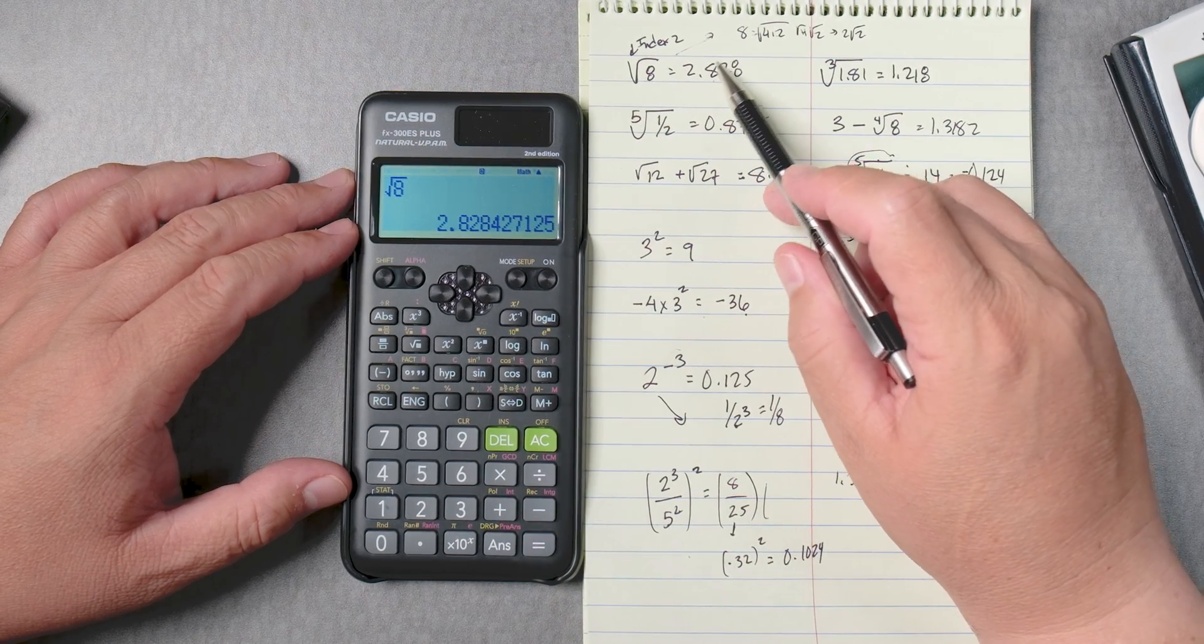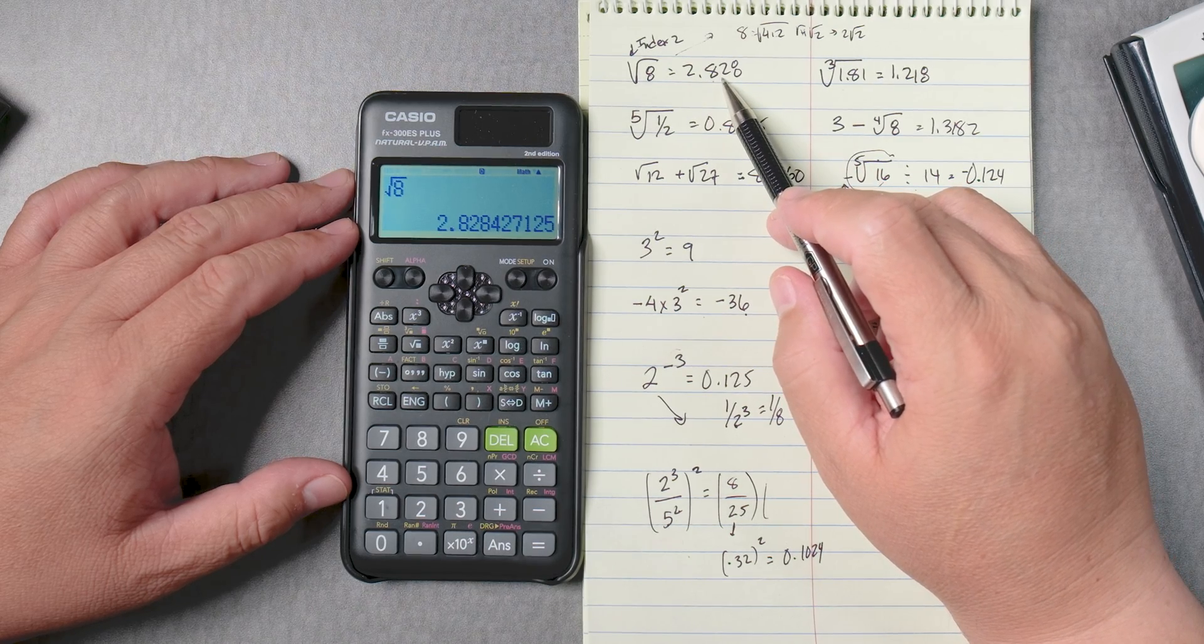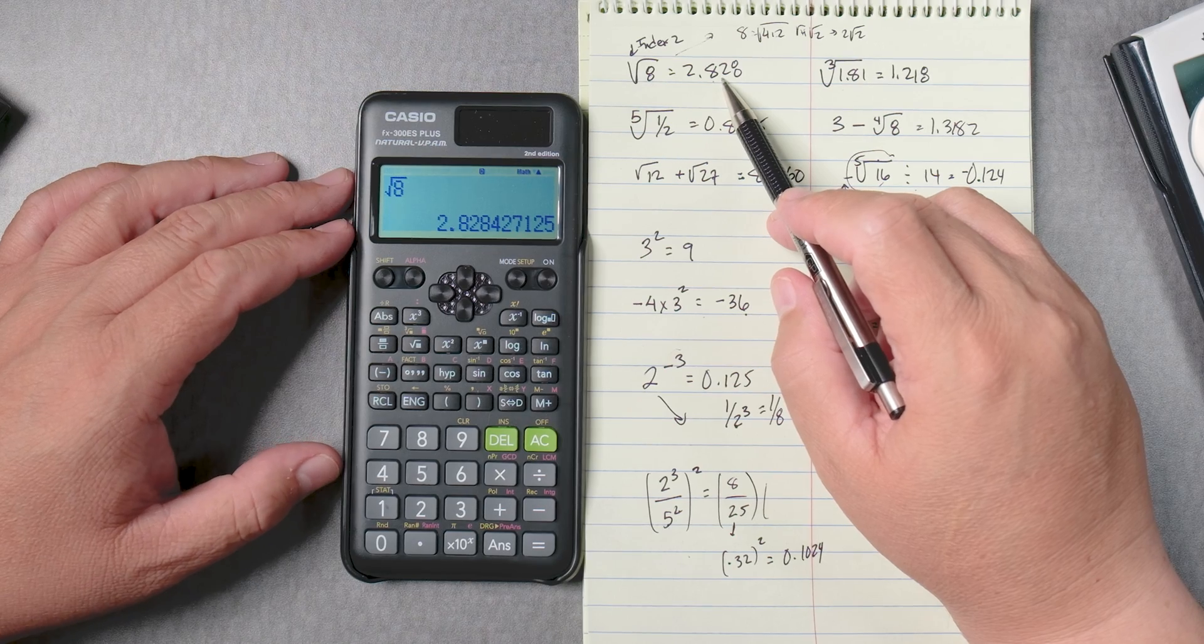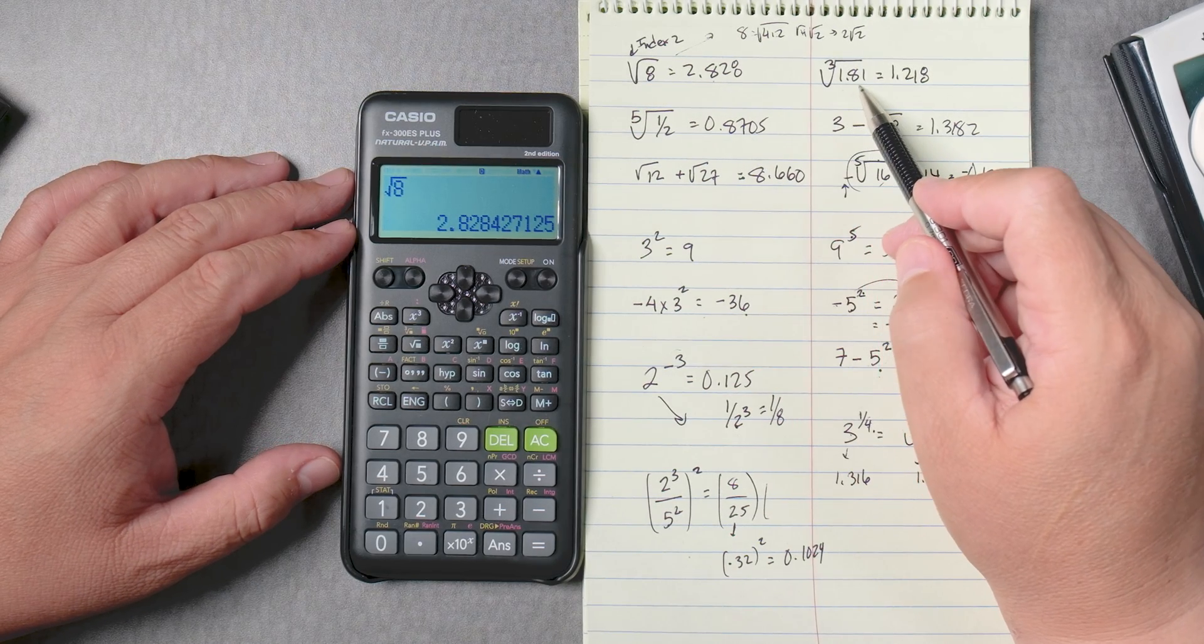Another thing also, in this video, we're not going to talk about how many values you place after the decimal place. This is where your teacher will tell you. The third root of 1.81.